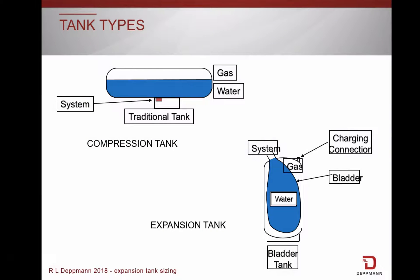In this slide, you will see the two different types of expansion tanks. Things in common: all are connected to the system, and all contain system fluid and a compressible gas. A standard or compression tank allows gas and fluid to be in contact, while diaphragm and bladder tanks have impermeable rubber membranes. The diaphragm and bladder tanks can be pre-charged with air or nitrogen.